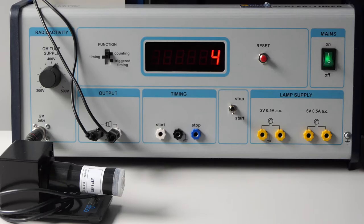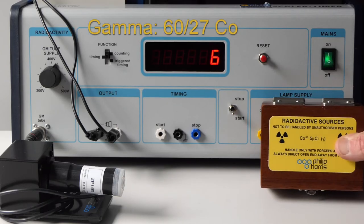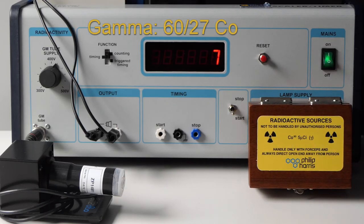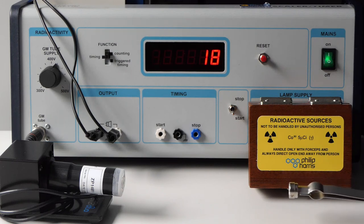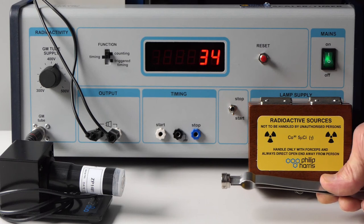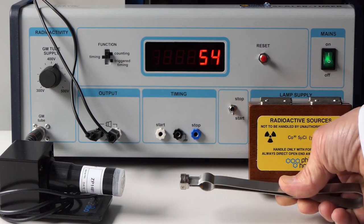Now gamma. The safety precautions I'm using: the sources will only be removed from their storage containers for as little time as possible. I'm holding them a good distance away from my body using forceps, and the storage containers are lined with lead to shield the radiation.